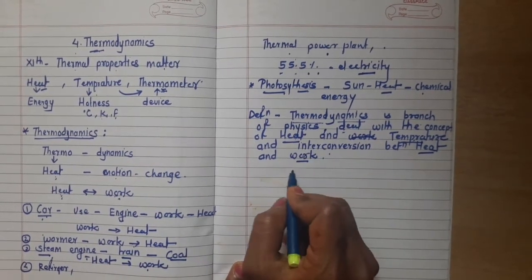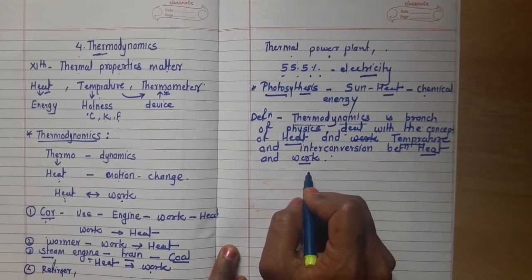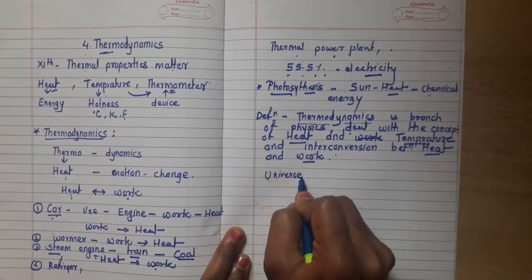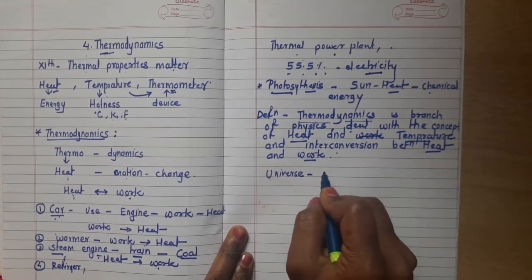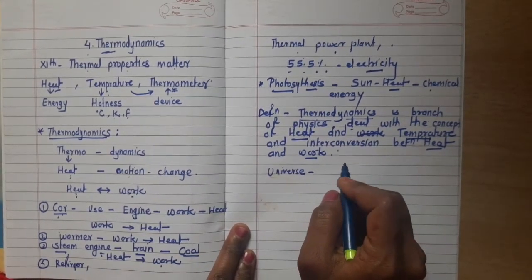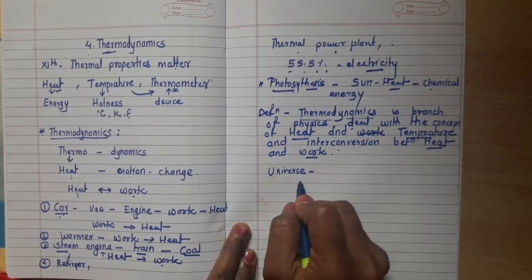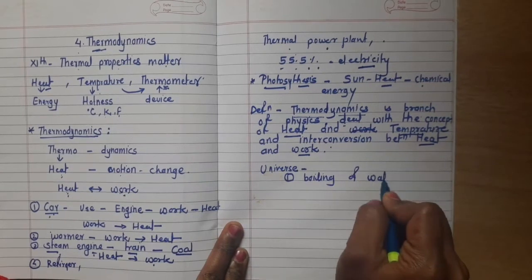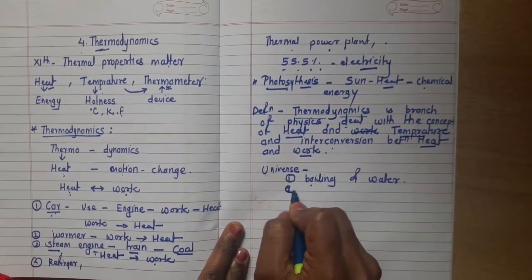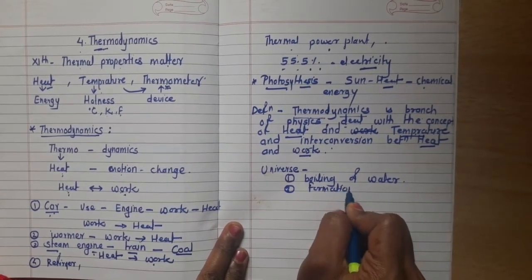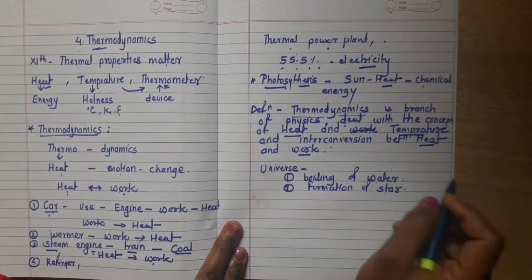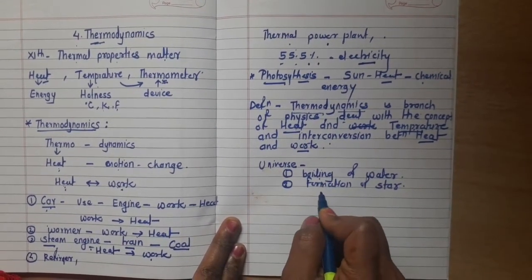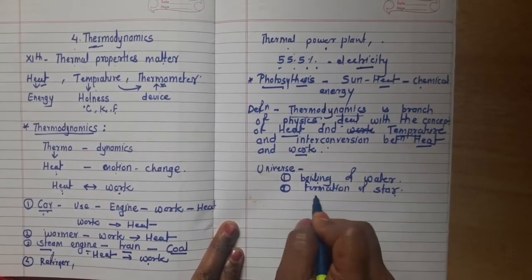The concept of Thermodynamics extends from smaller things to bigger things. For smaller things, we can take an example like the boiling of water. And for bigger things, we can take the example of the formation of a star. So Thermodynamics covers everything from smaller phenomena like boiling of water to bigger phenomena like the formation of a star.